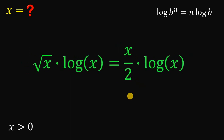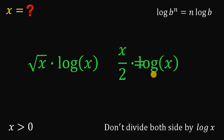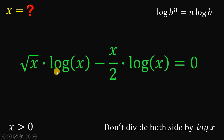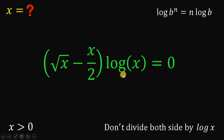At this point, here's a tip: please don't divide both sides by logarithm of x. This is a trap — if you do that, you lose one possible value for x. Instead of dividing both sides by logarithm of x, what we're going to do is equate this to 0. So we have square root of x times logarithm of x minus x over 2 times logarithm of x equals 0. We have a common term of logarithm of x, so we can factor it out.